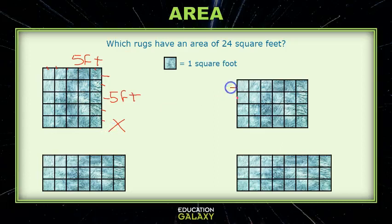Let's look at this other one, one two three four, four feet and then one two three four five six feet. Well this is looking more correct because four feet times six feet is 24 square feet, so this one matches.